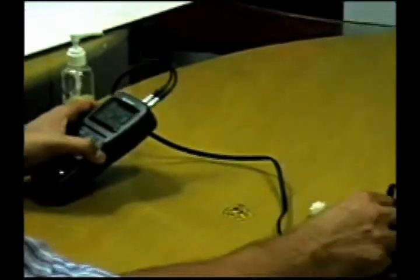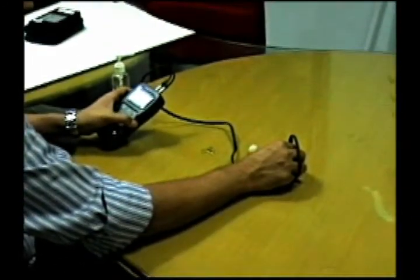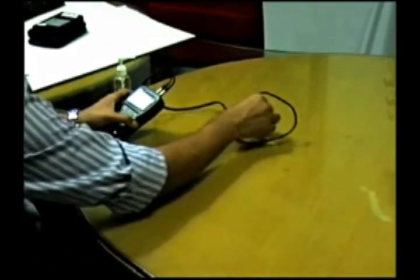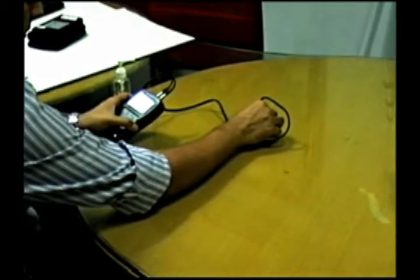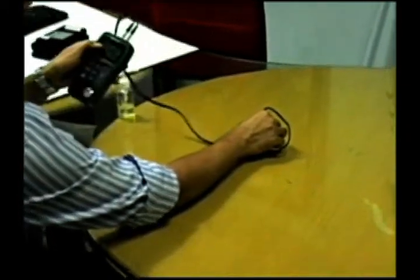Similarly, we can test the thickness at various other locations. For example, here is 12.95 mm, or at another location is 12.98. At all times there is a contact display over here which confirms that the contact of the transducer with the material under test is perfect.